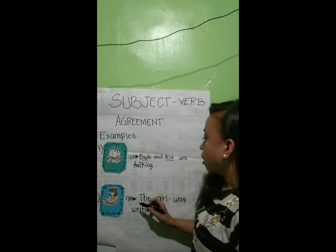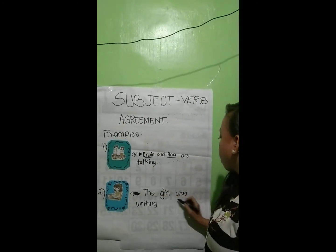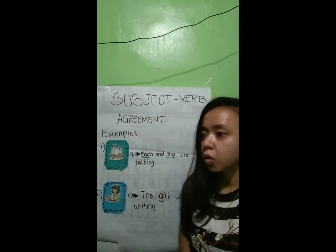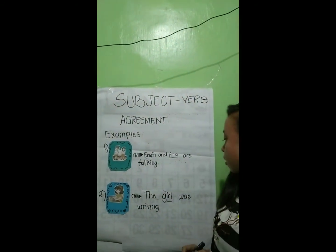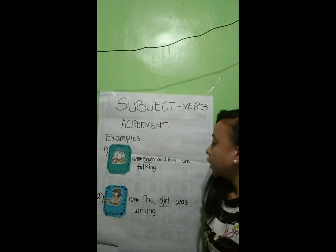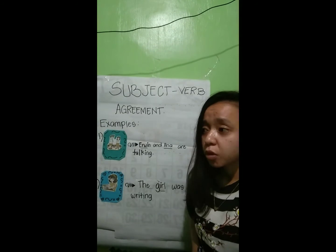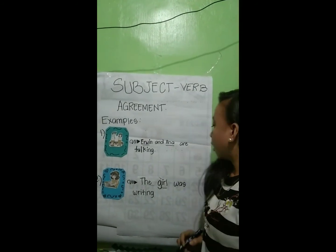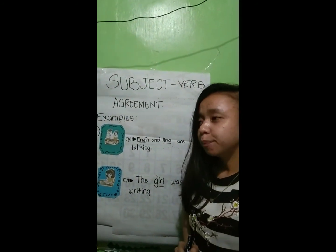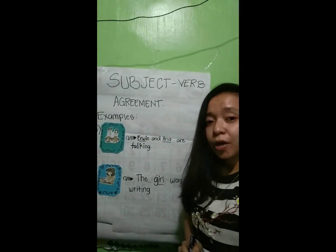The second example is: the girl was writing. As you can see in the picture, the girl was writing. Here, 'a girl' is the subject which is singular, and 'was' is the linking verb which is singular too.